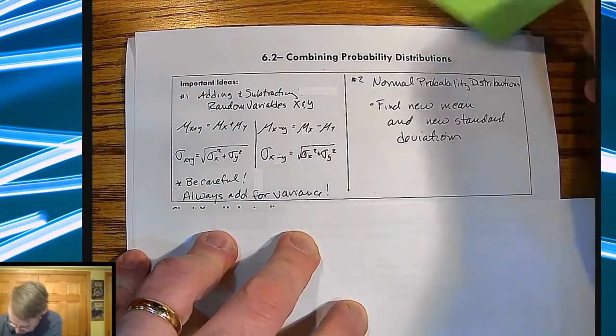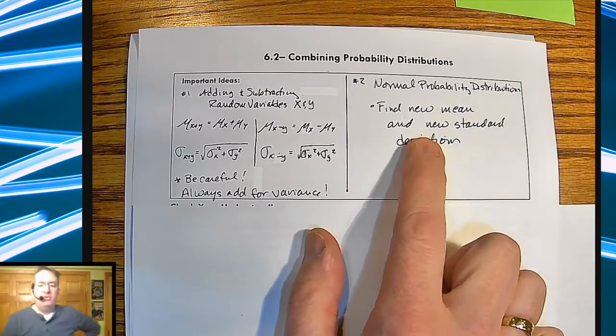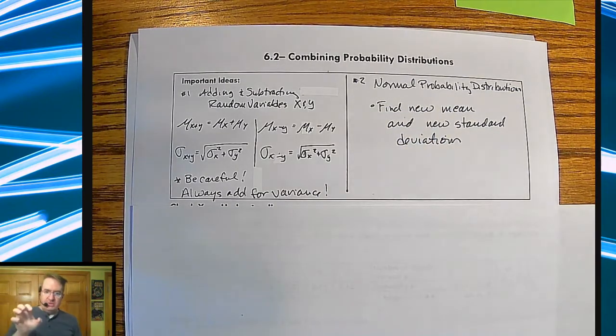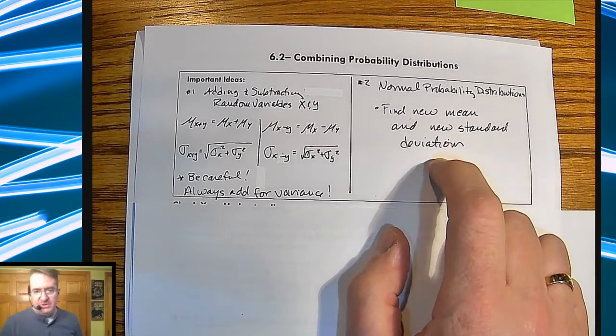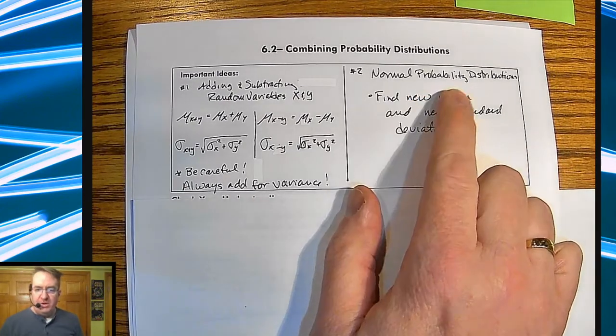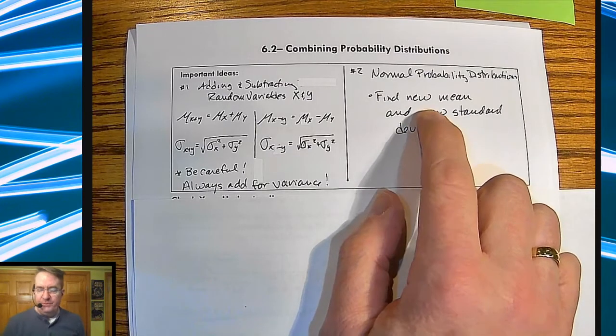And then for the normal probability distribution, you're going to go through and you're going to find the new mean and the standard deviation. So if you're combining the two different probability distributions, you're going to have to go through and find the new mean and the new standard deviation for that. So if you do this part, you can't forget to do this part.